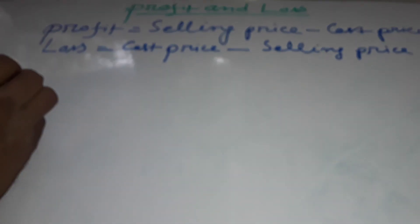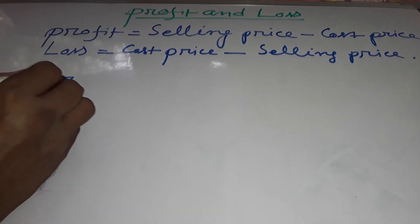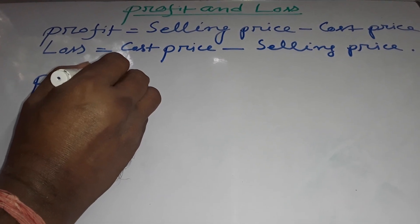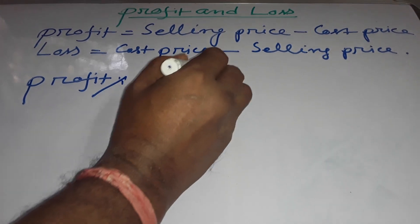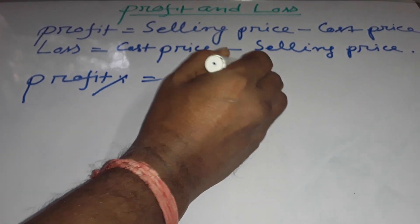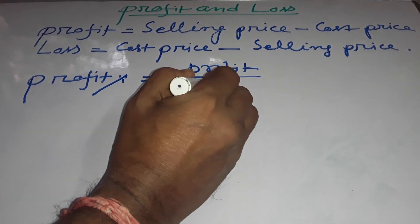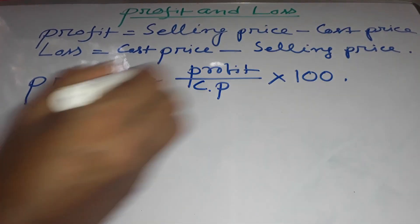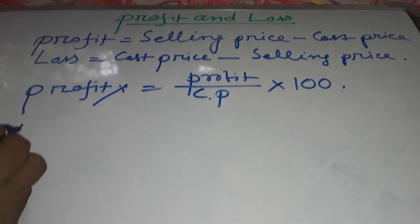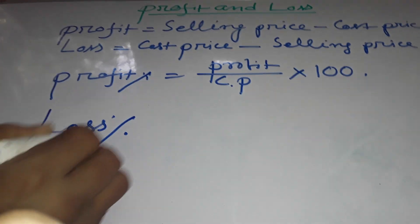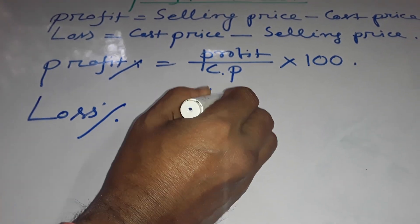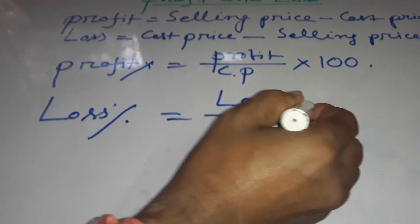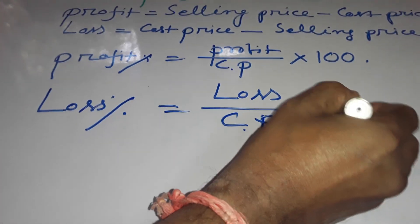Profit or gain percent equals profit divided by cost price, multiplied by 100. Loss percent equals loss divided by cost price, multiplied by 100.